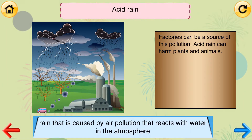Acid rain. Rain that is caused by air pollution that reacts with water in the atmosphere. Factories can be a source of this pollution. Acid rain can harm plants and animals.